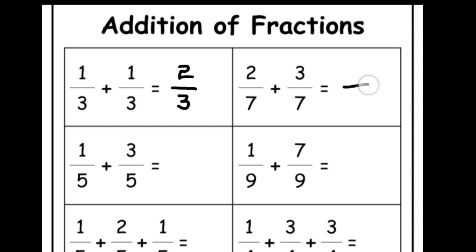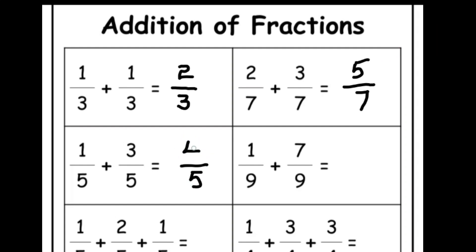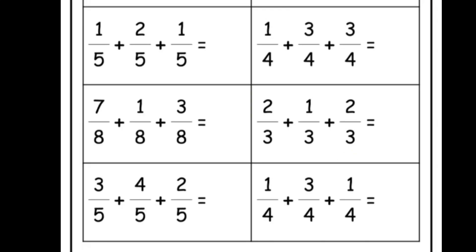In the next question, 2 by 7 plus 3 by 7: the denominator will be 7, and adding the numerators gives 5, so the answer is 5 by 7. Next, 1 by 5 plus 3 by 5: the denominator is 5 and the numerator is 1 plus 3 equals 4, so the answer is 4 by 5. And 1 by 9 plus 7 by 9 gives 8 by 9.